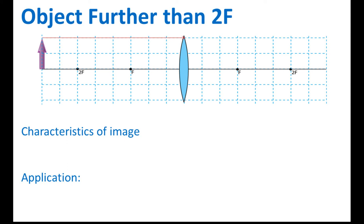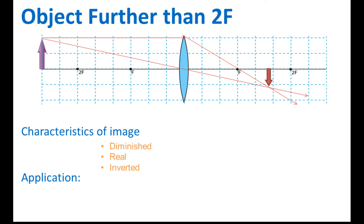The last case: the object is placed further than 2F. A ray parallel to the principal axis passes through F, and another ray passes through O. The image forms on the other side and is smaller than the object — diminished. It is a real image and it is inverted. This is used in a camera. You need to know how to draw the ray diagram, as exams may ask you to draw one.